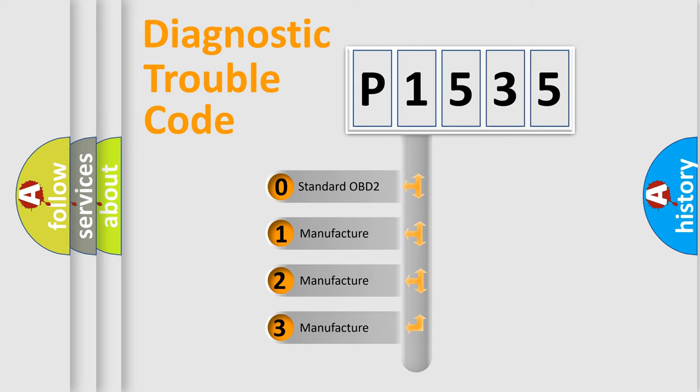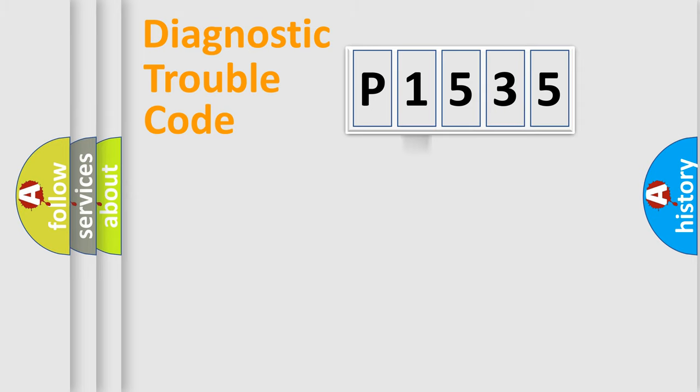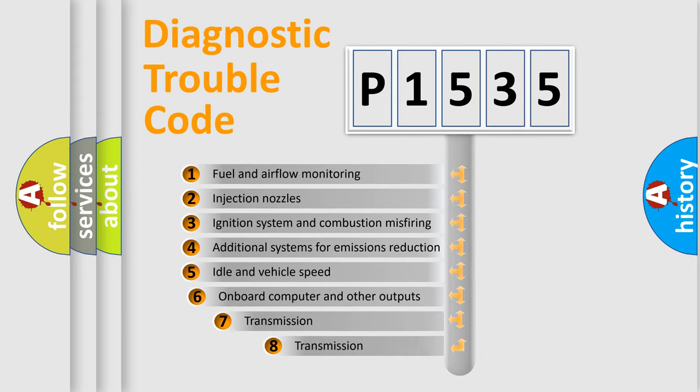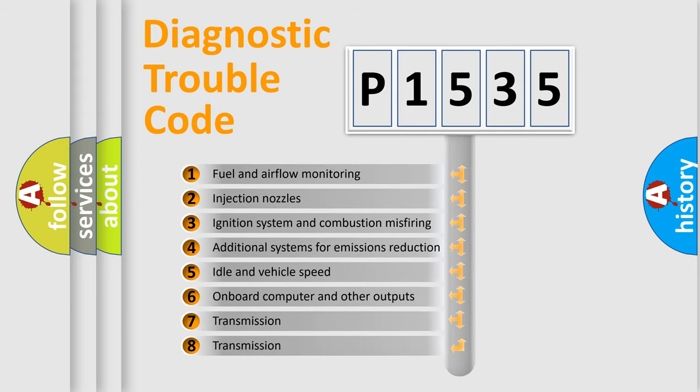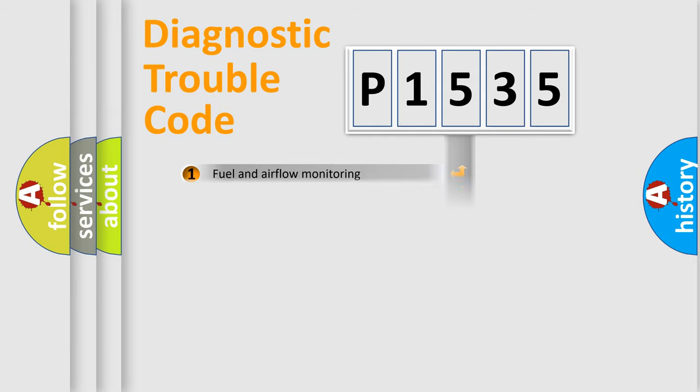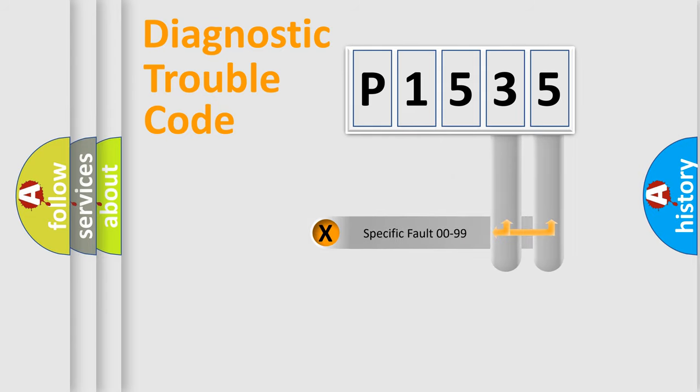If the second character is expressed as zero, it is a standardized error. In the case of numbers 1, 2, or 3, it is a more prestigious expression of the car-specific error. The third character specifies a subset of errors. The distribution shown is valid only for the standardized DTC code.